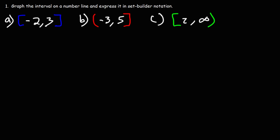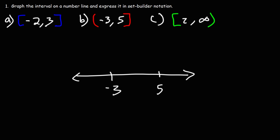Now let's move on to part B. It's between negative 3 and 5. We have a parenthesis at negative 3, so I'm going to put an open circle there because it does not include negative 3. But we have a bracket at 5, so we need a closed circle at 5.